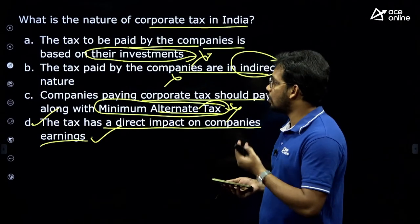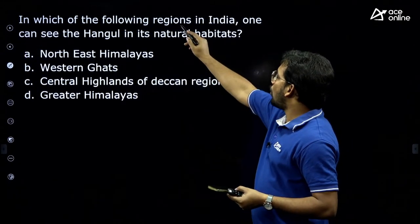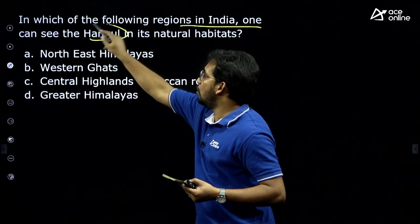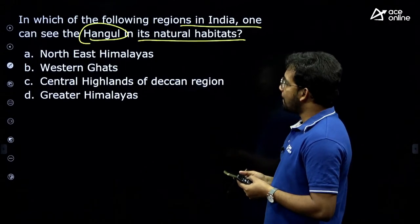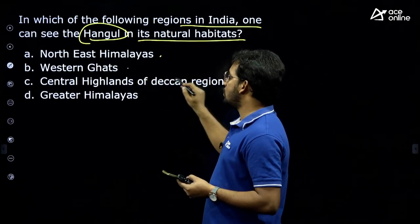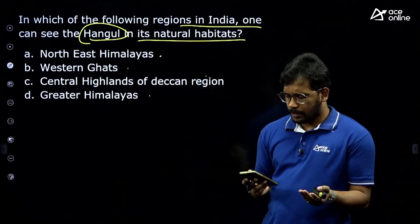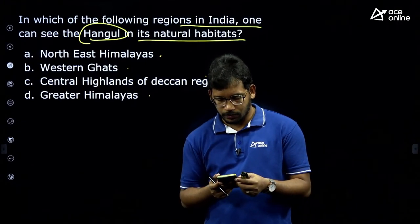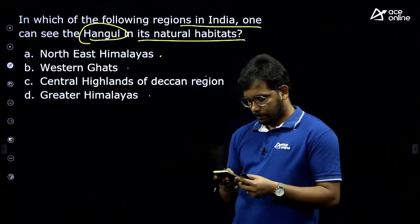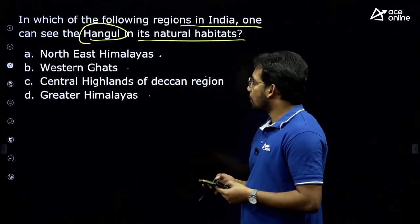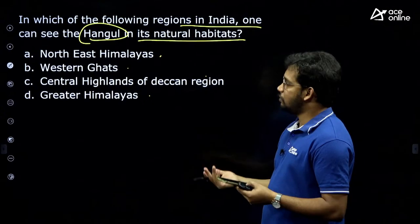Question 4: In which of the following regions in India can one see Hangul in its natural habitat? Options: A) Northeast Himalayas, B) Western Ghats, C) Central Highlands of Deccan region, D) Greater Himalayas. The answer is D — Greater Himalayas, specifically Jammu Kashmir and northern Himachal Pradesh. Hangul is the state animal of Jammu Kashmir.